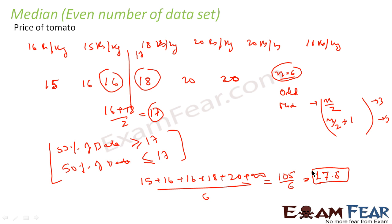When I say the mean is 17.5, what I mean is: if I buy 1 kg from each shop, the average cost will be 17.5. But when I say the median is 17, that means 50% of data is less than 17 and 50% of data is more than 17. So you get the difference between mean and median.